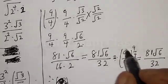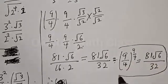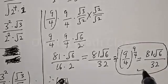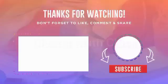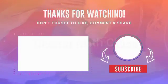Therefore, 9 divided by 4, raised to the power 9 divided by 4, is equal to 81 root 6 over 32. That is our final answer. If you have enjoyed the class, please don't forget to like, share, comment and subscribe. Thank you.